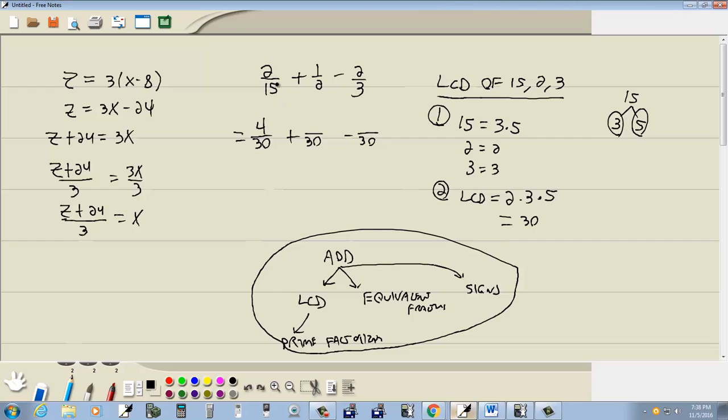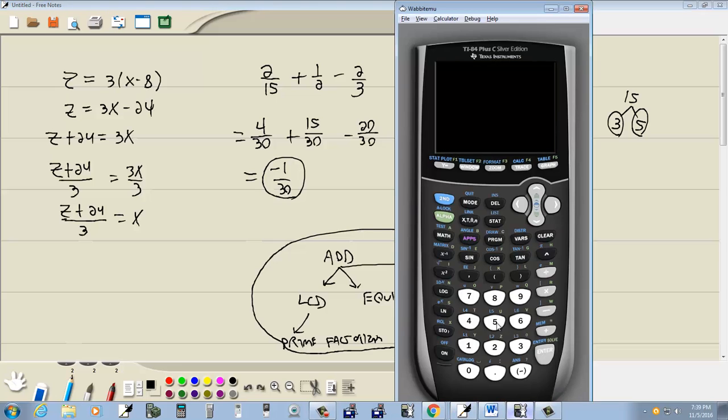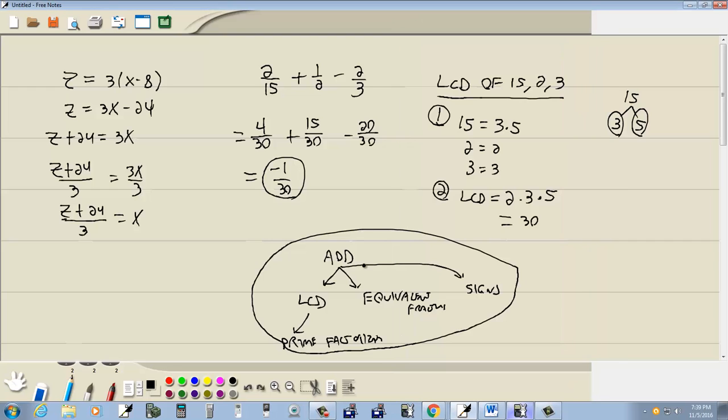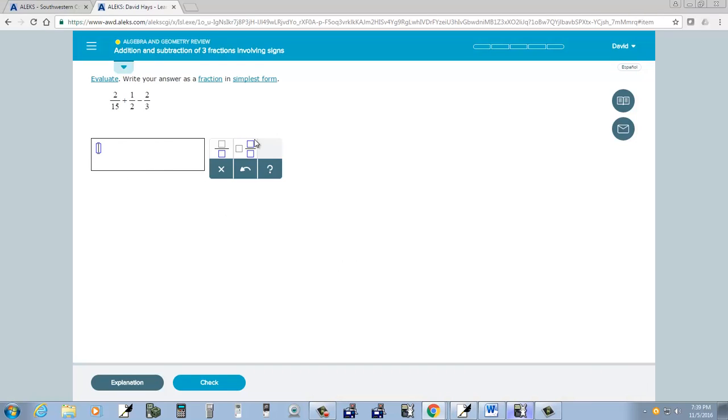So this would be four over thirty. Multiply top and bottom by two. Here you multiply top and bottom by fifteen. Here you multiply top and bottom by ten. And let me double check myself. Four over thirty. Fifteen over thirty. Minus that. So it gives us nineteen minus twenty is negative one over thirty. And let me just double check myself. So I got four over thirty. Two over fifteen. Plus one divided by two. Minus two divided by three. And then enter. You get a decimal. And we do math. Enter, enter. Negative one over thirty.